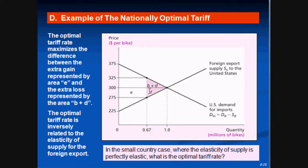In the small country case, this only applies to the large country, because the large country has a supply curve that is not perfectly elastic. In the small country, the foreign export supply is perfectly elastic, and the optimal tariff rate is actually zero — you cannot have an optimal tariff rate because you can't affect the foreign export supply price.